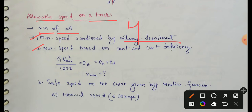Second one: maximum speed is based on cant and cant deficiency. We have the theoretical super elevation formula: V_max squared equals G × V²_max divided by 127 × R, which equals actual super elevation plus cant deficiency. This gives us the second maximum speed.